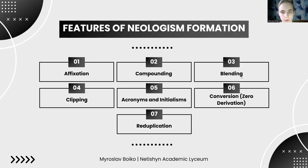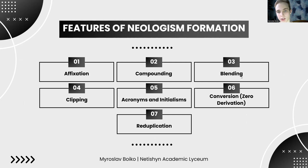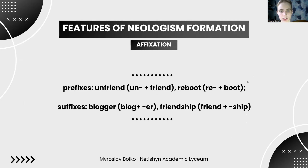What are the features of neologism formation in the English language? The creation of neologisms in English follows several linguistic patterns and processes that reflect the dynamic nature of the language. The main features include affixation — the addition of prefixes or suffixes to existing words to create new meanings. For example, unfriend from un- plus friend, or reboot from re- plus boot. Suffixes include blocker from block plus -er, and friendship from friend plus -ship.